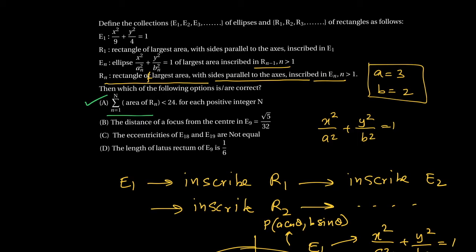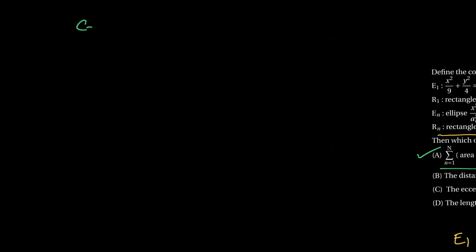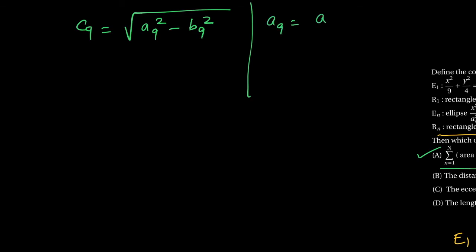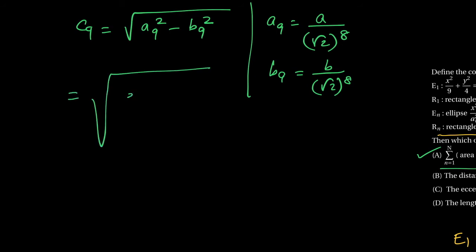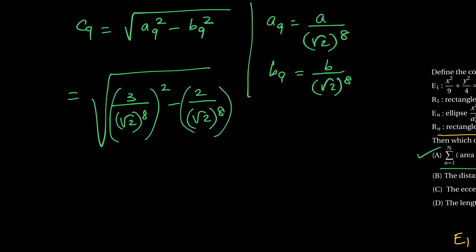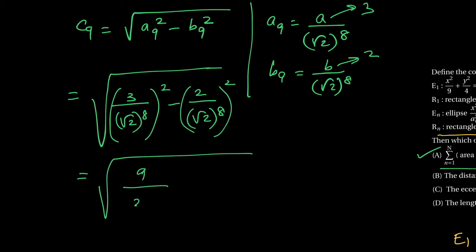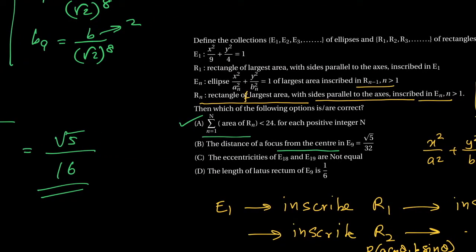For the option about distance of focus from center for E9: c9 = √(a9² − b9²). Here a9 = 3/(√2)^8 and b9 = 2/(√2)^8. So c9 = √(9/2^8 − 4/2^8) = √(5/2^8) = √5/16. The option states √5/32, which is wrong.